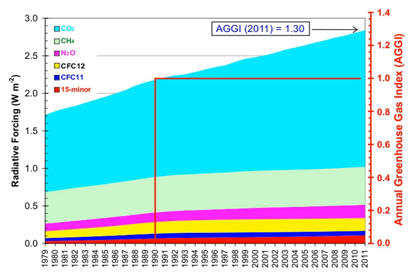Greenhouse gases are those that absorb and emit infrared radiation in the wavelength range emitted by Earth. In order, the most abundant greenhouse gases in Earth's atmosphere are water vapor, carbon dioxide (CO2), methane (CH4), nitrous oxide (N2O), ozone (O3), and hydrofluorocarbons, which includes HCFCs and HFCs.